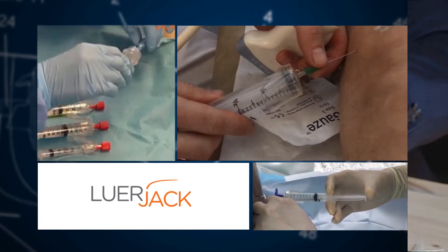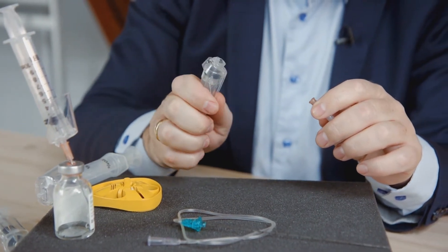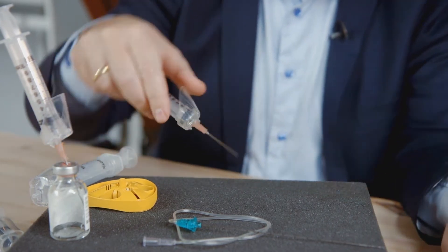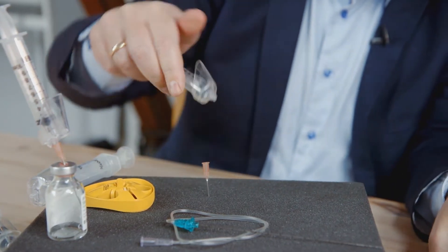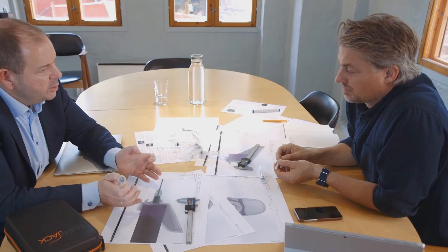Therefore we have developed a Luer Jack which is basically a disconnection device which can also be screw fitted onto a needle like this and really disconnected with one hand without touching the critical parts.